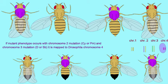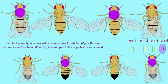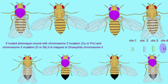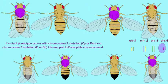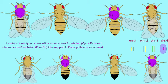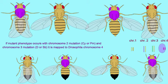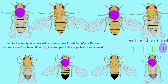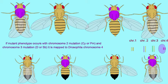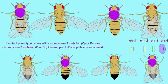So if there are mutants which express both either curly or diket — if that was the cross performed — or plum and stubble, if that was the cross performed, then this would indicate that the gene maps to Drosophila chromosome 4.